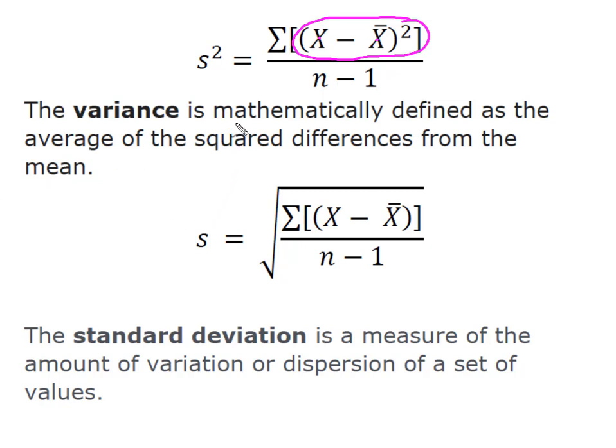When we move from the variance to the standard deviation, you'll notice the standard deviation is simply the square root of the variance, and that gives us a good measure of the amount of variation or dispersion within a set of values.